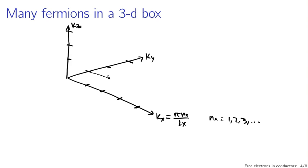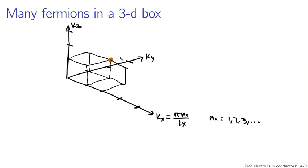Each intersection point is associated with some cube between the intersection and the origin, and that cube signifies a certain volume in k-space. For instance, the point at ky = 2, kz = 1, kx = 1 — each of these points is associated with a cube. The volume of this cube, which becomes important when we start filling states, is given by the product of the side lengths in k-space: pi/Lx times pi/Ly times pi/Lz, which equals pi cubed divided by the total volume of the material.